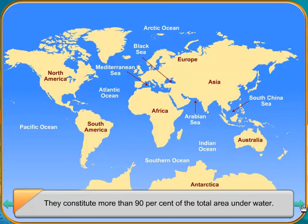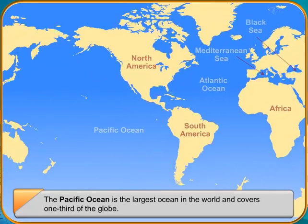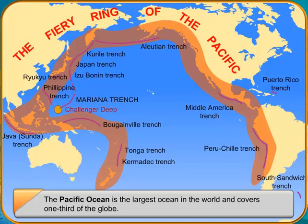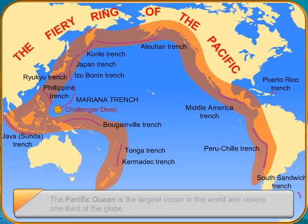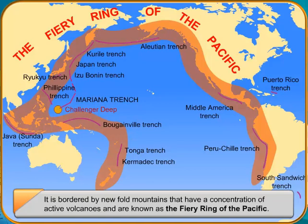Pacific Ocean. The Pacific Ocean is the largest ocean in the world and covers one-third of the globe. It is bordered by new-fold mountains that have a concentration of active volcanoes and are known as the Fiery Ring of the Pacific.